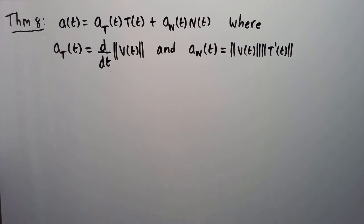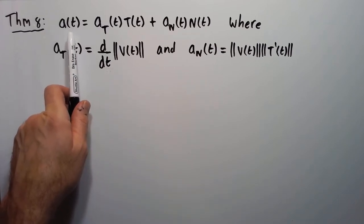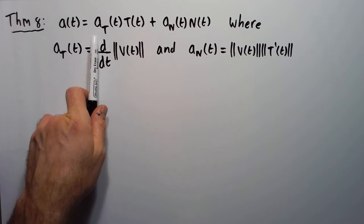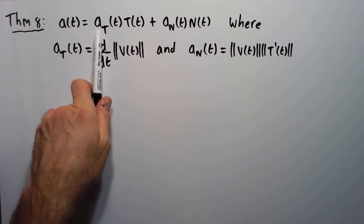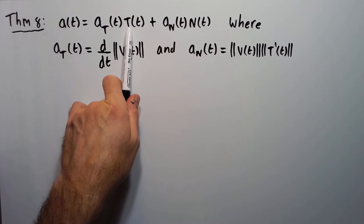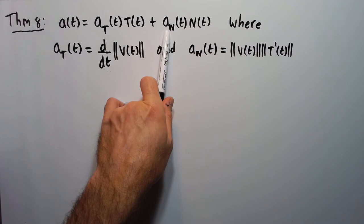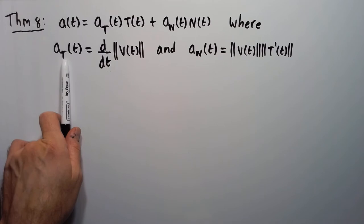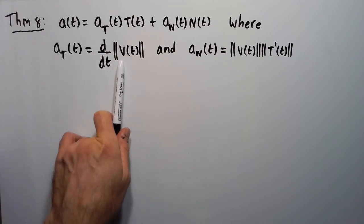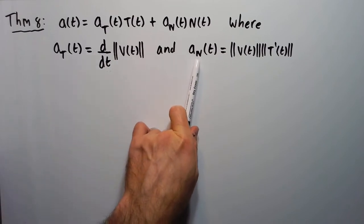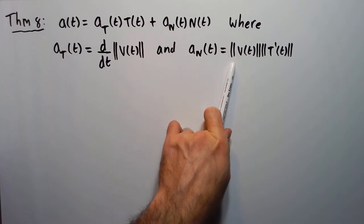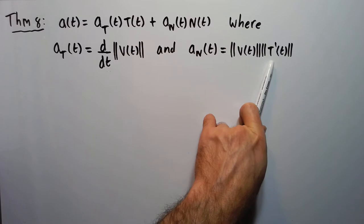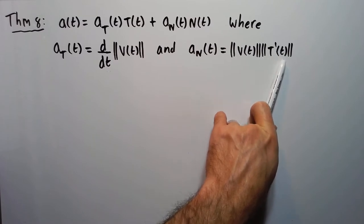This is section 12.4 continued. Let's look at Theorem 8, which says the acceleration can be written as the tangential acceleration times the unit tangent vector T plus the normal acceleration times the principal unit normal vector N, where the tangential acceleration is defined as the change in speed, and the normal acceleration is the speed times the magnitude of T prime.